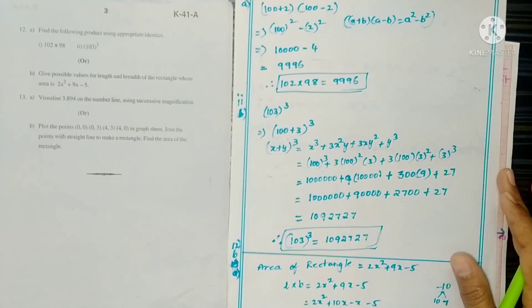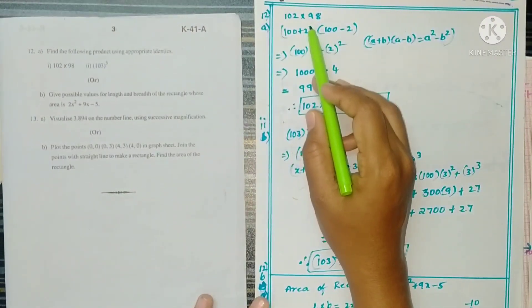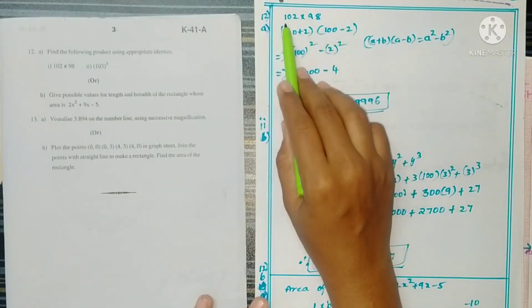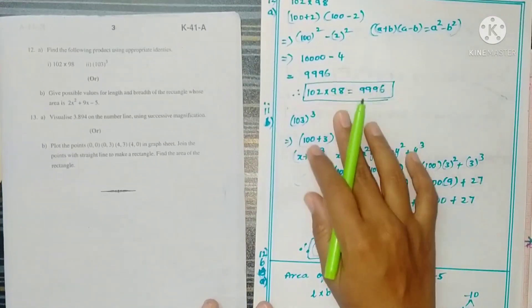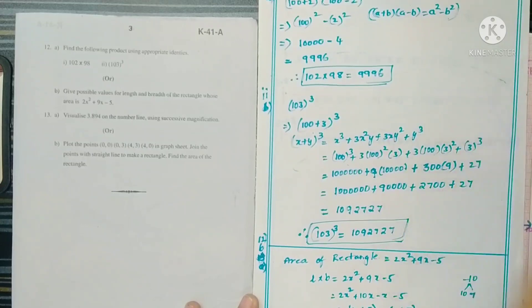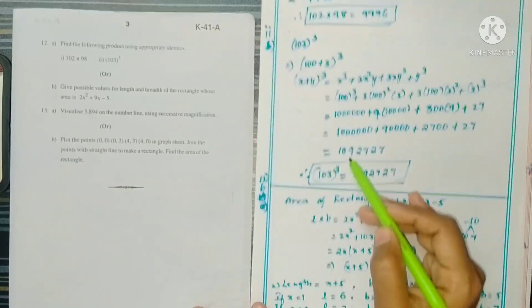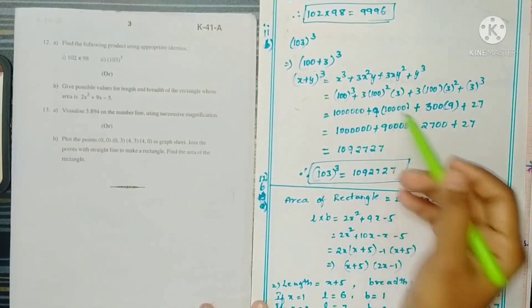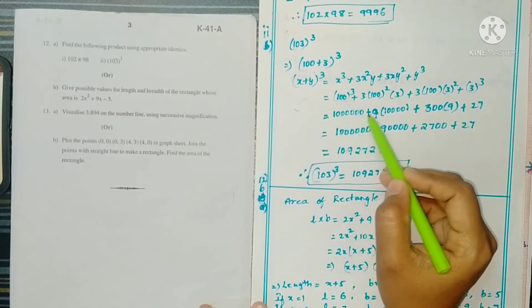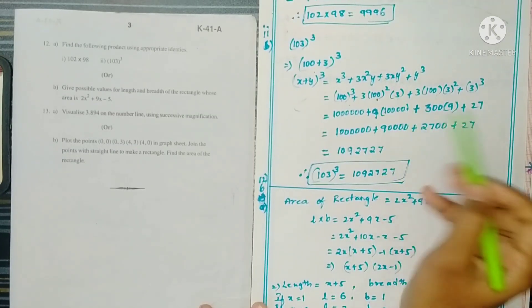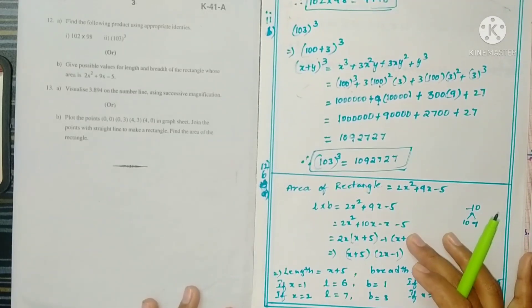Question 12a: Find the product using appropriate identities. For (100 + 2)(100 - 2), use the identity (a + b)(a - b) = a² - b², giving 10000 - 4 = 9996. For (100 + 3)³, use the (x + y)³ identity. Note: 100³ has six zeros, 100² has four zeros.